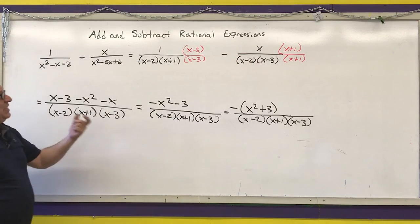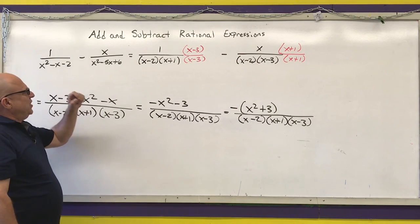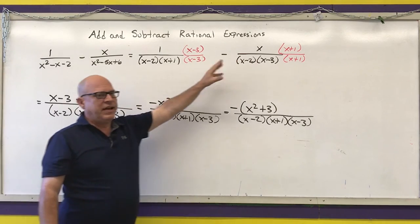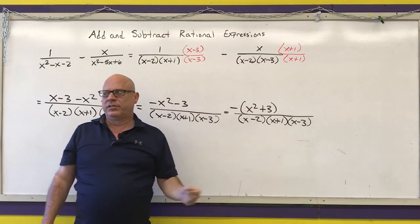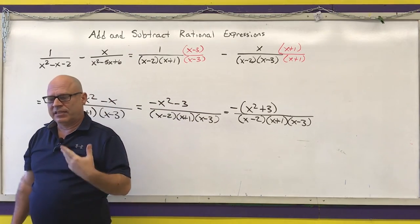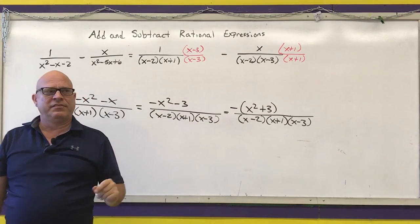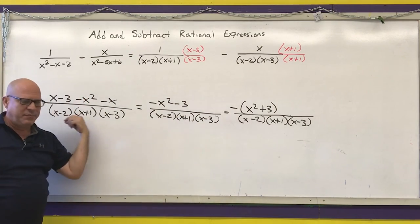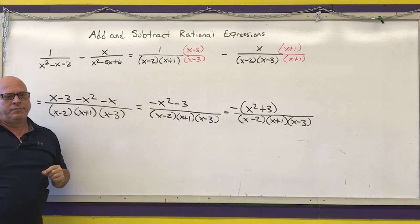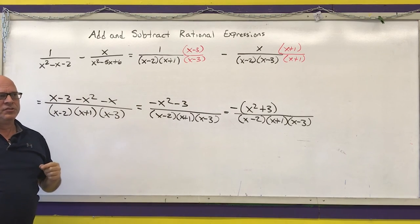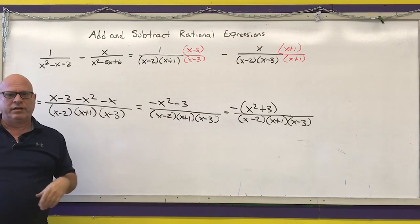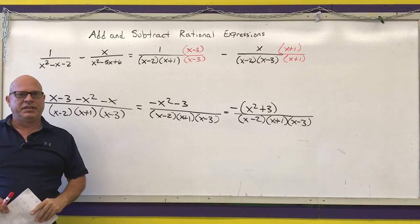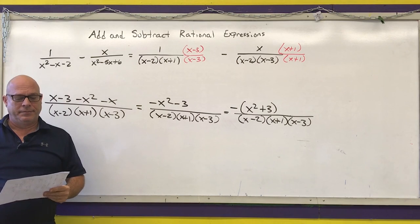The LCD is always the highest power that each factor appears in the denominators. As stated throughout, the hardest part is factoring your polynomials so you can determine what the LCD is going to be.